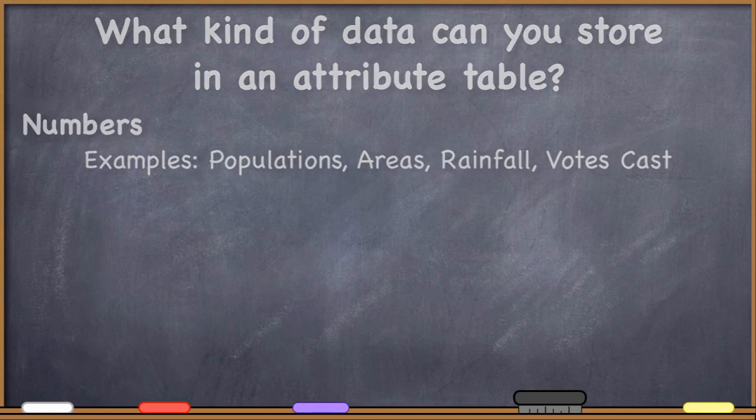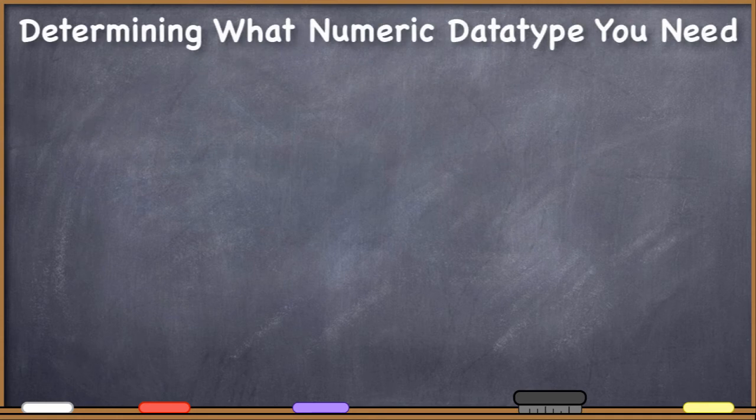But we do have to be more specific than just number. We have to specify what kind of number we would like to store. In order to determine what kinds of numbers you need, you need to ask yourself two questions about the data that you're going to be storing. And by the way, if you have a database background or an IT background, you'll probably recognize all of these data types. These are not specific to GIS.